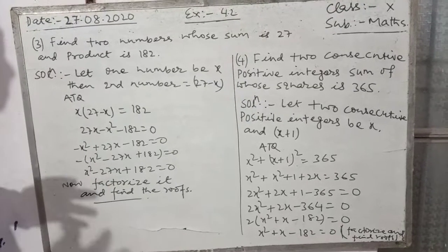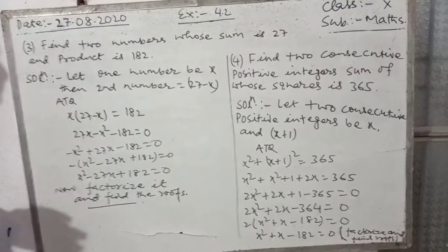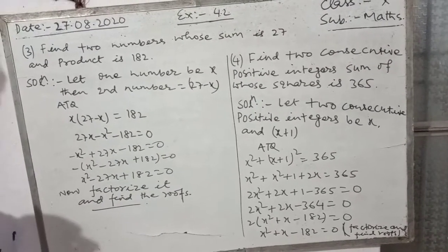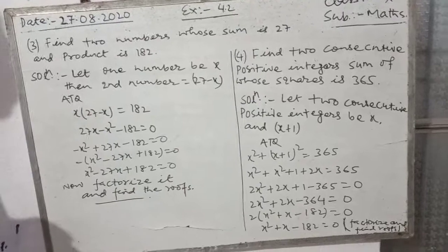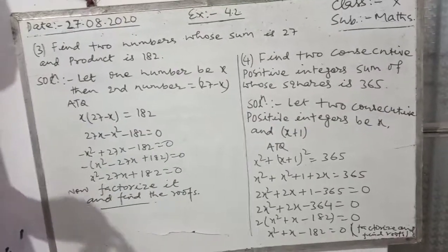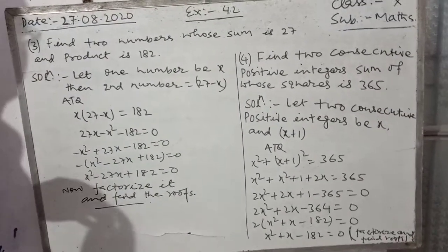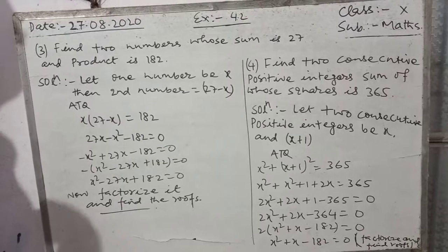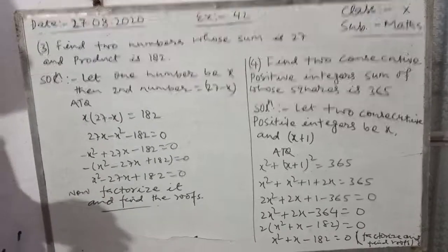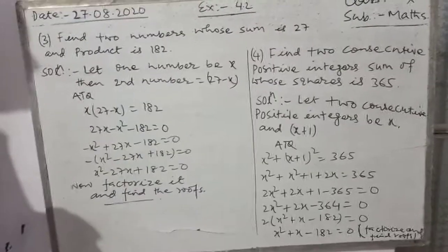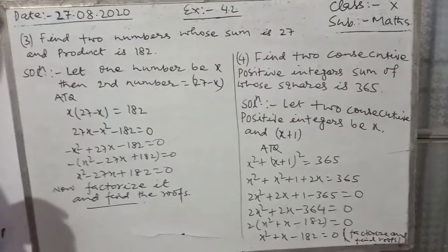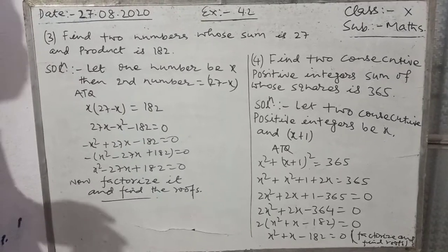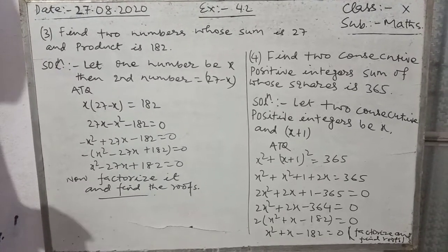Good morning. Question 3, Exercise 4.2: Find two numbers whose sum is 27 and product is 182.